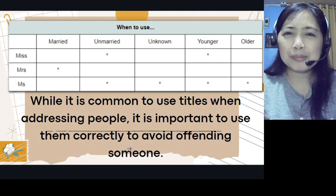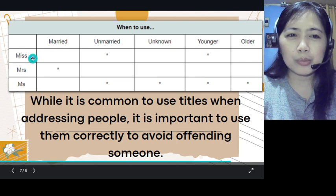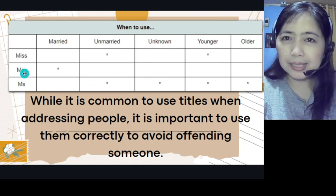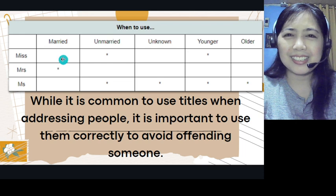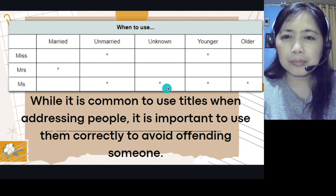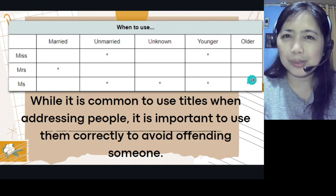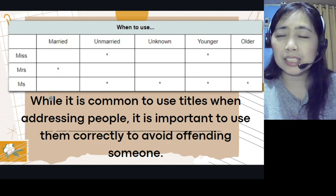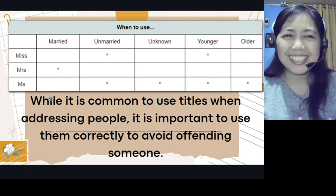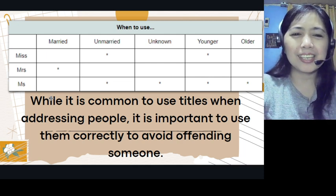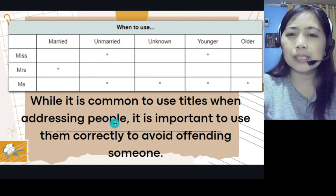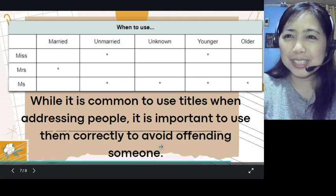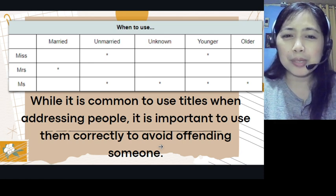Here's a simple summary: Miss is for unmarried and younger women. Mrs. is only for married women. Ms. covers unmarried, unknown, younger, or older women. So as you can see, Ms. is the most common or safest title you can use for a woman. I hope you now know how to address your teachers correctly. While it is common to use titles when addressing people, it is important to use them correctly to avoid offending someone — it can actually offend someone if used incorrectly.